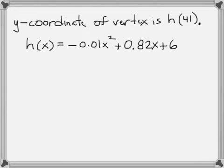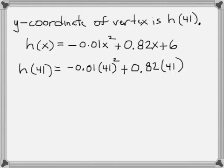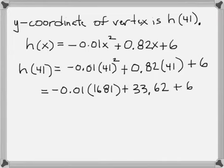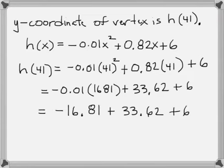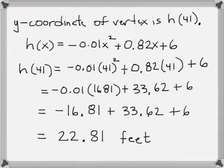Go back to the original function and substitute in 41, and then we're going to run through those calculations there. Square 41, multiply 41 times 0.82, and keep working through that. When we simplify all that out, we get 22.81 feet, and that actually is the answer that we're looking for. That's the height that the ball achieves.